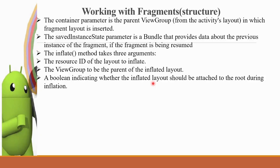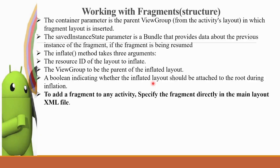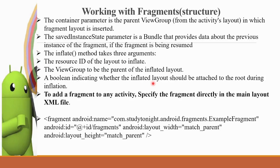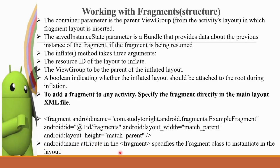If the boolean is false, the layout is not attached to the root. In the Java class, you can add a fragment tag in the activity's main layout XML file. You can add a fragment tag with the XML namespace and the android:name attribute, along with an ID, width, and height. You add the name attribute pointing to the fragment class to instantiate it in the layout.